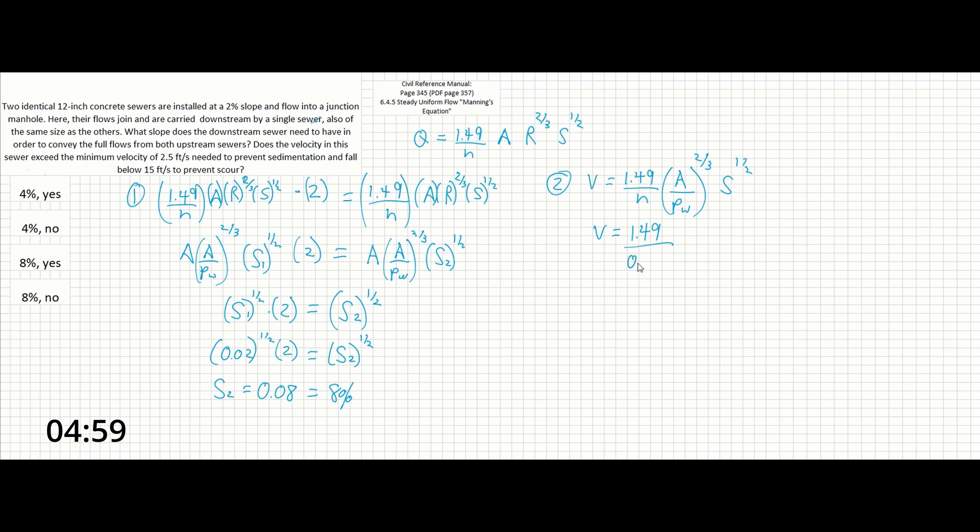The Manning's n is going to be 0.013 for concrete. I'm not actually sure if that's in the manual or not. Usually it'll be given if you need it though.